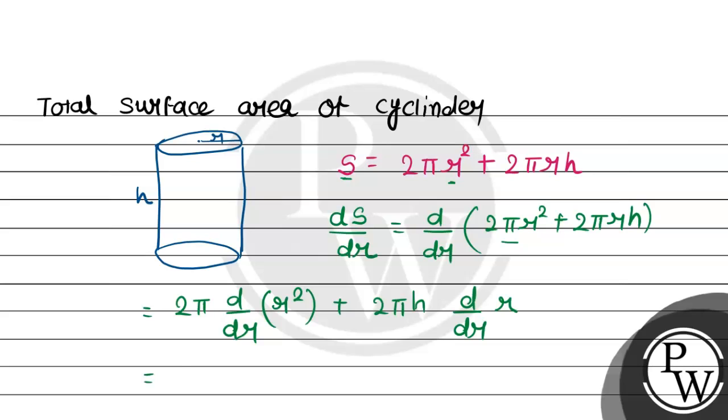Here 2π as it is. We know that d/dx of x^n is n·x^(n-1). So r² gives us 2r, plus the derivative of r with respect to r is 1, so this is just 2πh. Simplifying, 2 times 2 is 4, so we get 4πr + 2πh.